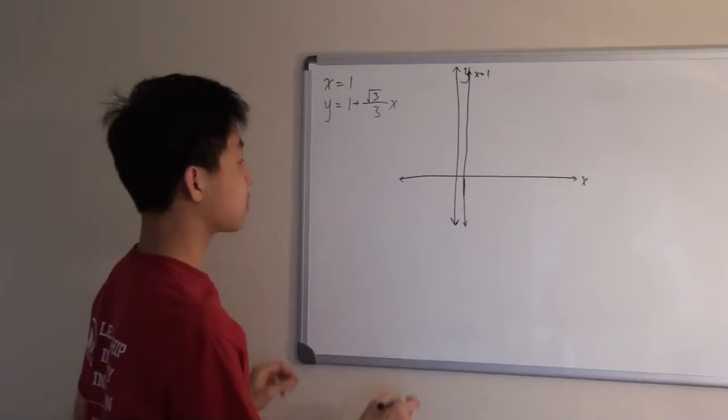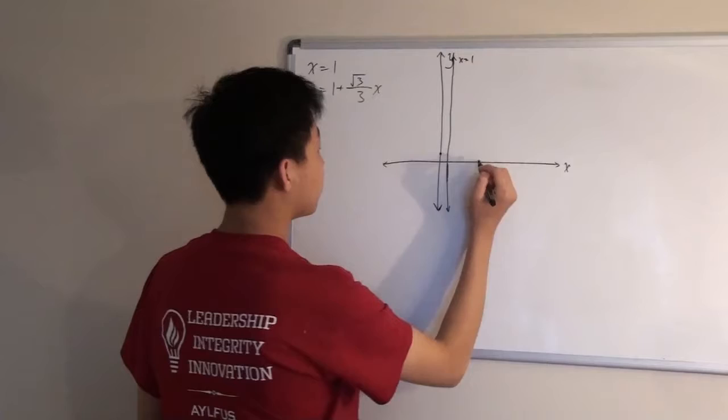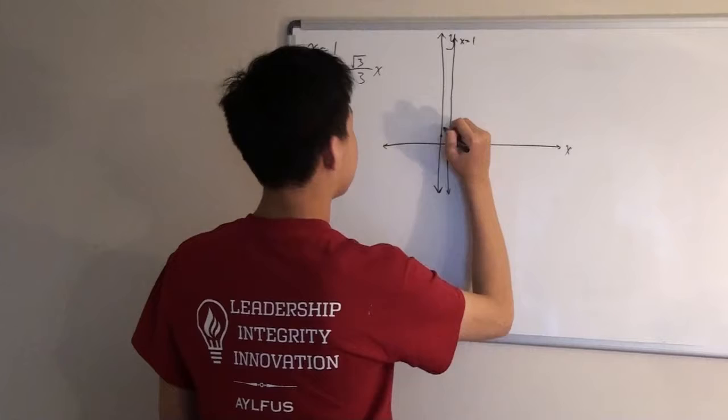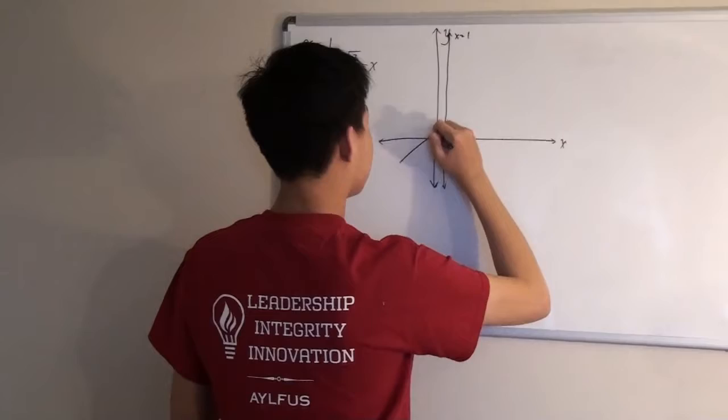And then the second one is y equals 1 plus root 3 over 3x. So, y intercept is right here, which is also 1. And then root 3 over 3, something like this.